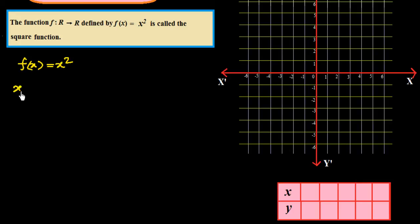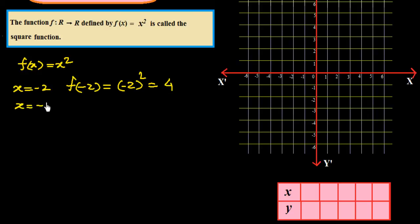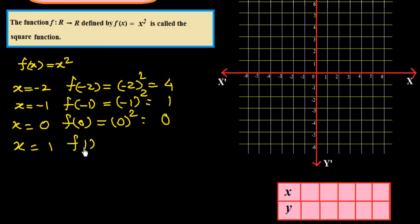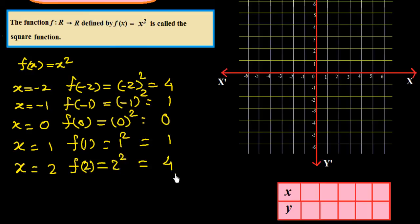If we put x equal to minus 2, then f of minus 2 is equal to minus 2 whole squared, which is 4. If x is equal to minus 1, then f of minus 1 is minus 1 whole squared, which is 1. x equal to 0, so f of 0 is 0 squared, which is 0. x equal to 1, so f of 1 is 1 squared, which is 1. x equal to 2, so f of 2 is 2 squared, which is 4.